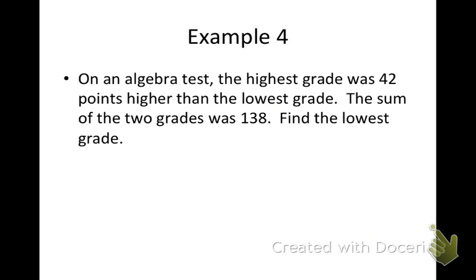Let's try another one. On an algebra test, the highest grade was 42 points higher than the lowest grade. The sum of the two grades was 138. Find the lowest grade. So again, what is it looking for? The lowest grade. We can let that be our variable. So we can use n if we want to, x, any variable is fine. Some people like to use like an L because it said lowest. But if you identify it and you actually write what it is equal to, then there won't be any confusion at the end if you have to find more than one solution. So we'll let this be the lowest grade.